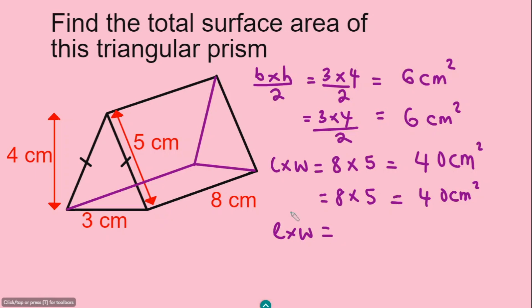Now, the length here is 8, multiply the width which is 3. And if you multiply this, you have 24 cm squared.